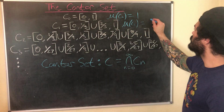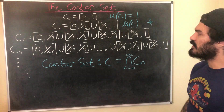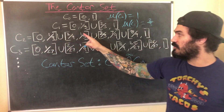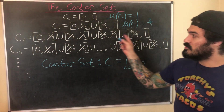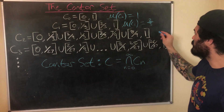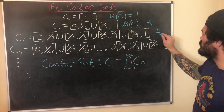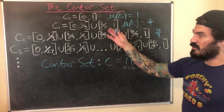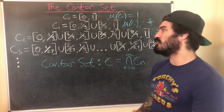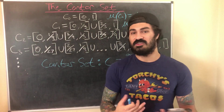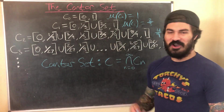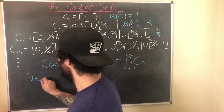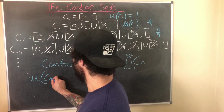Similarly, C2 consists of four closed disjoint intervals each with length 1/9, so its measure is 4/9. We can continue this process and come up with a formula for the measure of Cₙ for any non-negative integer n.